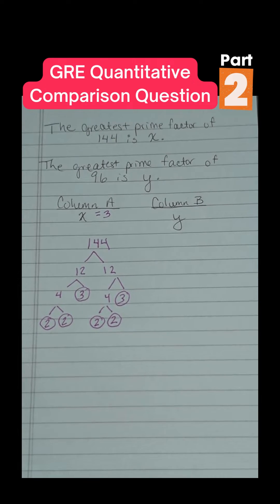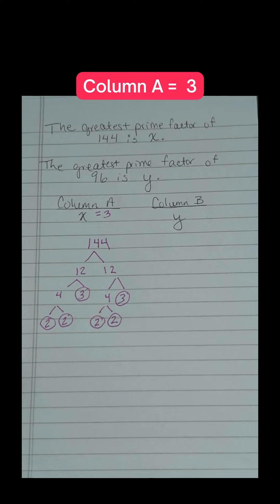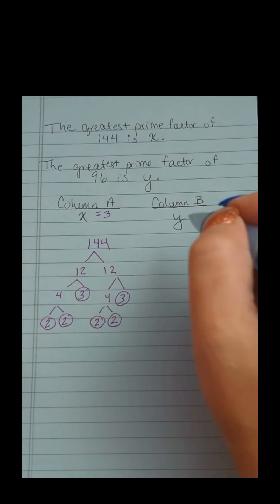Welcome back to the thrilling conclusion of this prime factorization quantitative comparison question. We had just found that column A equals 3, so let's check your work in column B.